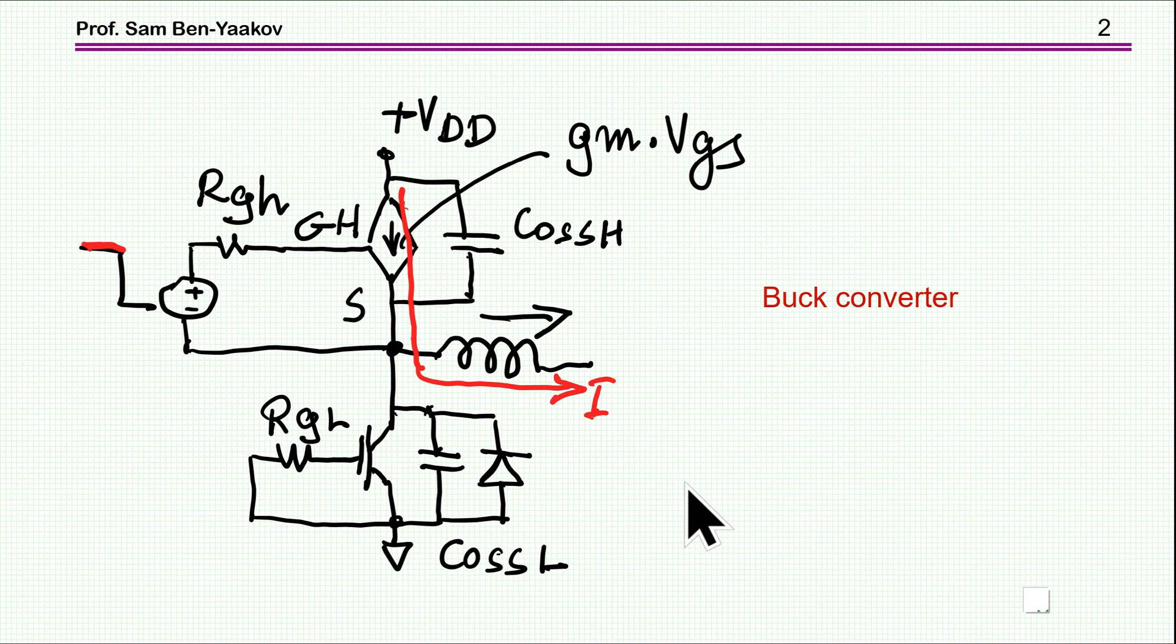I'm showing here a synchronous buck converter, a generic form of it, in which I have replaced the upper transistor with an equivalent circuit showing a dependent current source and the output capacitance.